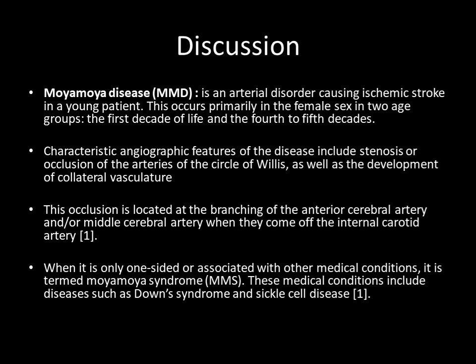First, coming to Moya-Moya disease. Moya-Moya disease is an arterial disorder causing ischemic stroke in young patients. This occurs primarily in the female sex in two age groups: the first decade of life and the fourth to fifth decades. Characteristic angiographic features include stenosis or occlusion of the arteries of the circle of Willis as well as development of collateral vasculature. This occlusion is located at the branching of the anterior cerebral artery and/or middle cerebral artery when they come off the internal carotid artery. When it is only one-sided or associated with other medical conditions, it is termed Moya-Moya syndrome. These medical conditions include diseases such as Down syndrome and sickle cell disease.